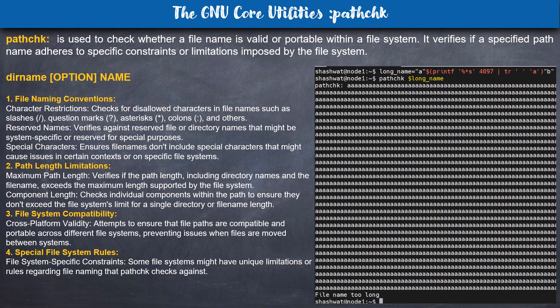The next command is pathchk. This is used to check whether a file name is valid or portable within a file system. It checks several things: first, whether the file name follows the naming convention supported by the file system; second, the path length; and third, file system compatibility — whether the file is compatible with the file system — as well as special file system rules.